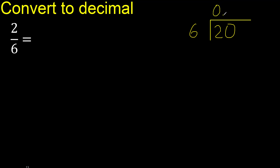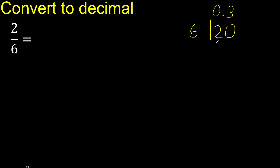Now 0.20 — 20 is not less than 6, so find which number multiplied by 6 is nearest to 20 but not greater. 6 multiplied by 4 is 24, which is greater. So 6 multiplied by 3 is 18, which is not greater. 20 minus 18 is 2.